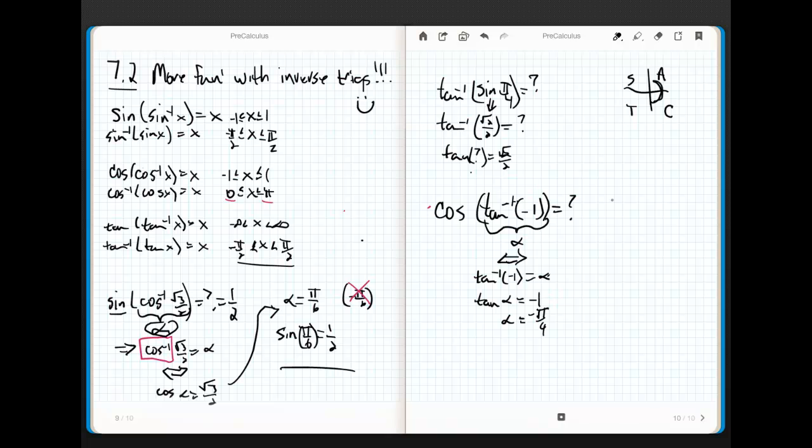That's what this guy is, which implies that I can rewrite this as the cosine of negative pi fourths. What is the cosine of negative pi fourths? Well, the cosine of pi fourths is root 2 halves. I know that cosine is positive in the fourth quadrant. All students take calculus. So this is just going to be root 2 halves.